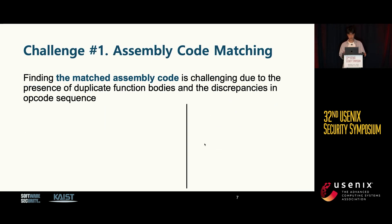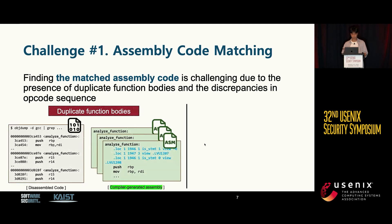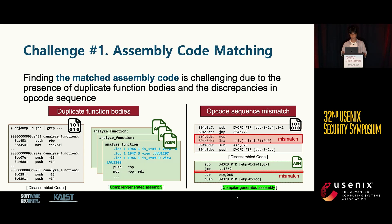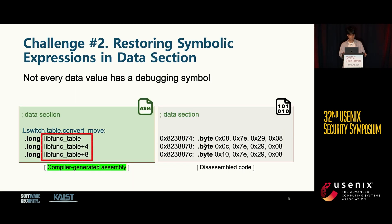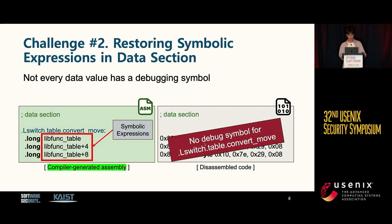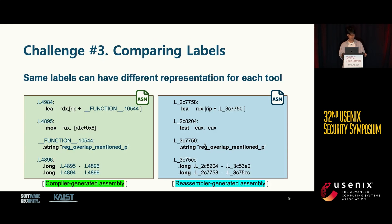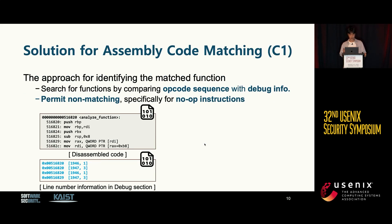The first challenge is matching the assembly code. Compilers often produce duplicate function bodies in different assembly files, and the opcode sequence in assembly files may not precisely match that of the target binary. The second challenge is that recovering symbol expressions in the data section is difficult because not every data value has debug symbols — for example, compiler-generated data such as jump table entries have no debug information. Third, the same label can have different representations for each tool.